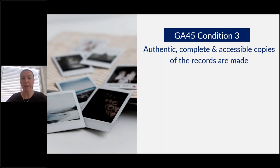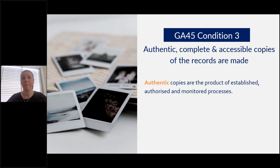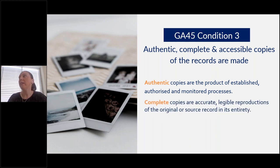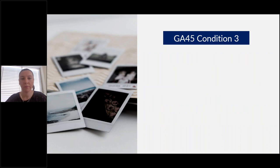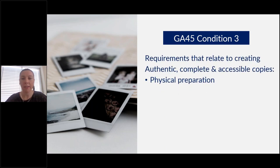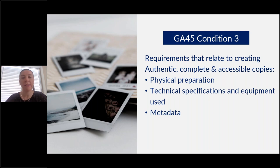The third condition of GA45 is that authentic, complete and accessible copies of the records are made. Authentic copies are the product of established, authorised and monitored processes. Complete copies are accurate, legible reproductions of the original record in its entirety. Accessible copies are managed, available and readable for the future. Requirements that relate to this concept include physical preparation, technical specifications and equipment used, metadata, quality control and the management of digitised records. The goal is to inform processes — internal or external — so that copies result in fit-for-purpose reproductions.